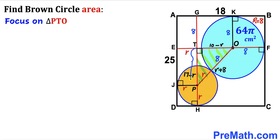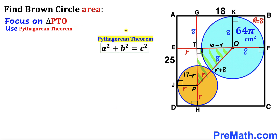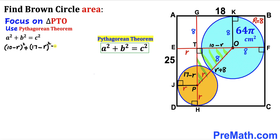We now apply the Pythagorean theorem to triangle PTO. The hypotenuse is r + 8, and the two legs are OT = (10 − r) and TP = (17 − r). So the equation is: (10 − r)² + (17 − r)² = (r + 8)².